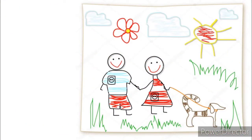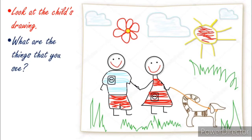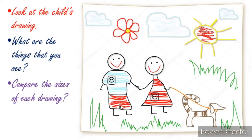Before anything else, kindly observe the picture. Look at the child's drawing. What are the things that you see? Based on the drawing, it has a sun, a flower, a boy, a girl, a dog, and a cloud. Compare the sizes of each drawing. Is it equally proportional? Kindly observe the drawing.